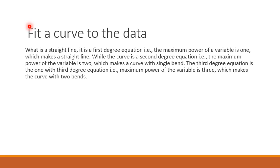Today we are going to discuss the topic: fit a curve to the data. What is a straight line? It is a first degree equation. The maximum power of the variable is one. We are discussing the independent variable X. If an equation has degree one — a first degree equation — then the line created by the equation will be a straight line.